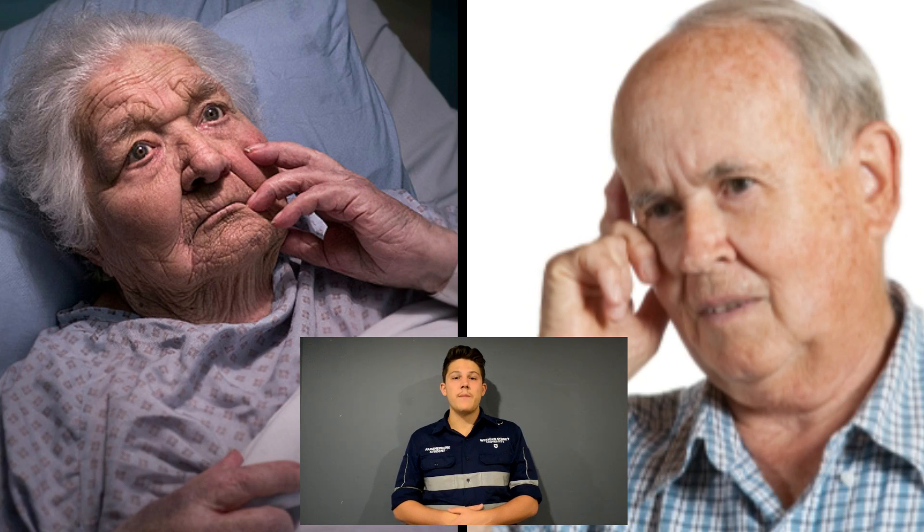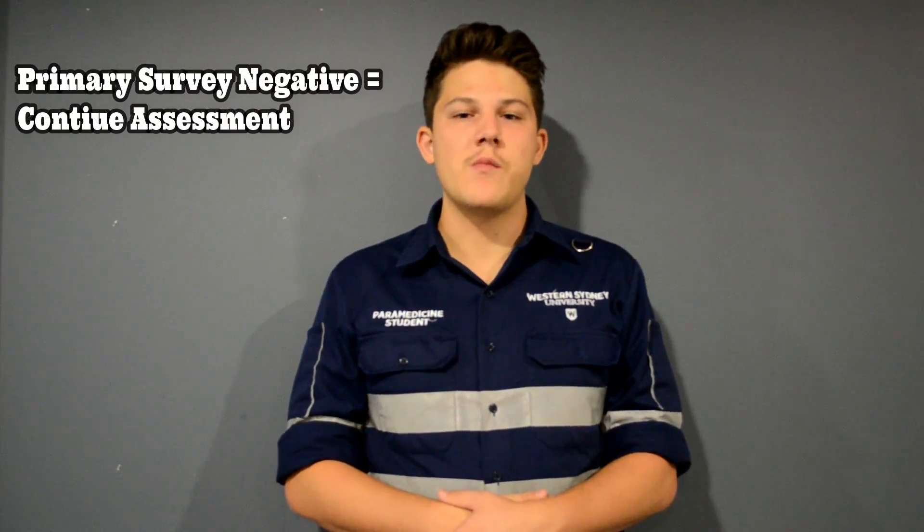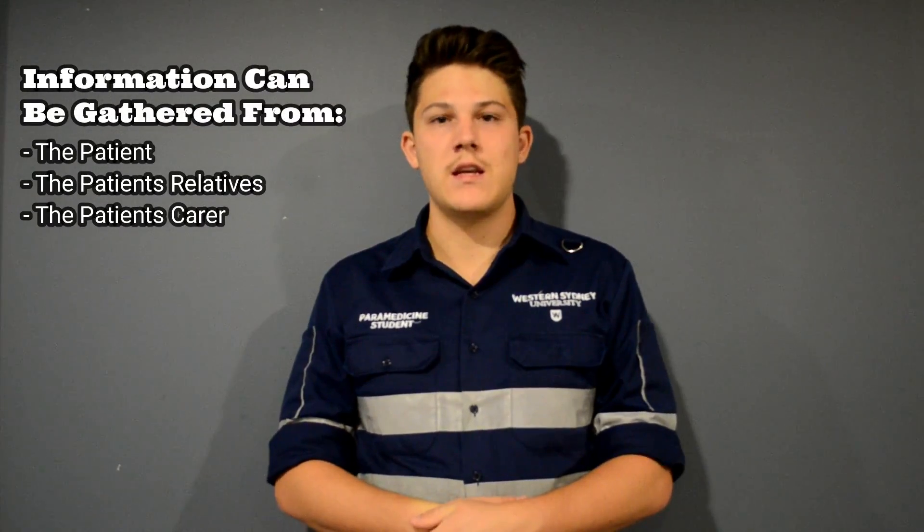When talking with our patient, it is also important to consider their mental state to rule out confusion. Following this, a thorough history should be undertaken once you have determined if the patient is primary survey negative. Taking a history requires collection of information gathered from either the patient, relatives of the patient or carers through questioning, testing and observations. This information is used to create a holistic picture of what the patient's health looks like, determine whether or not they are sick, possible causes of what illness they might have, as well as any signs or symptoms that could be alleviated with treatment.